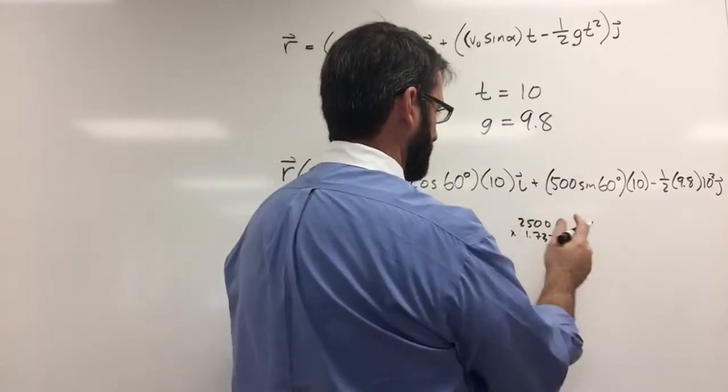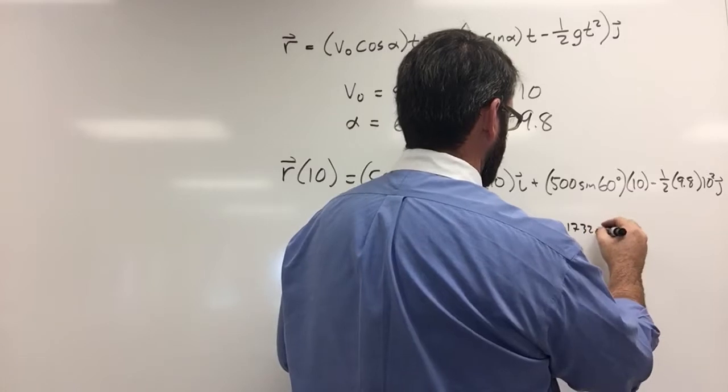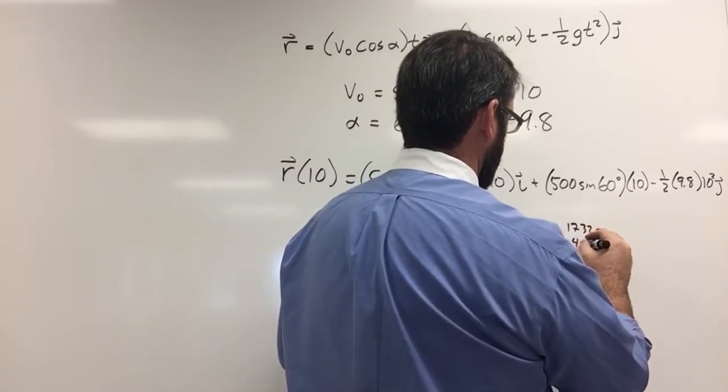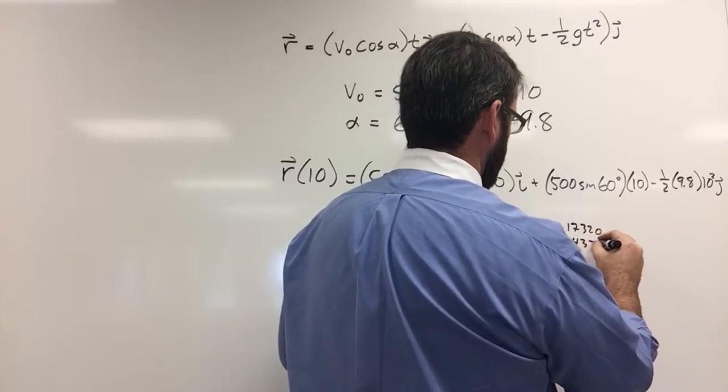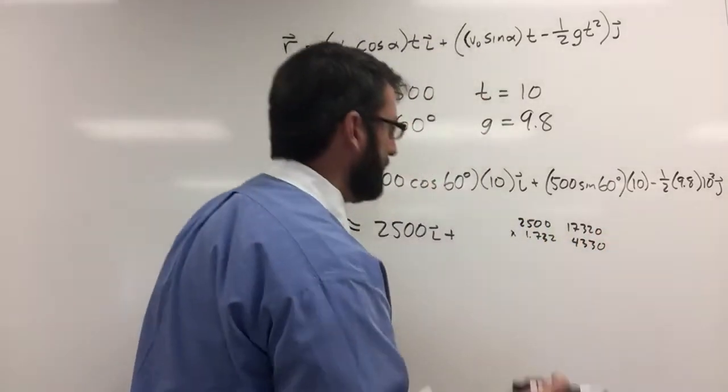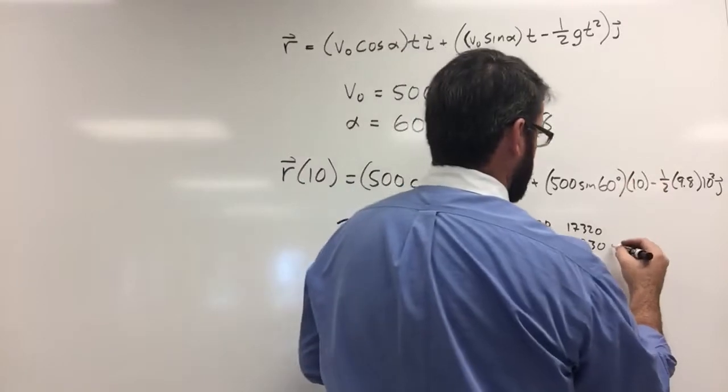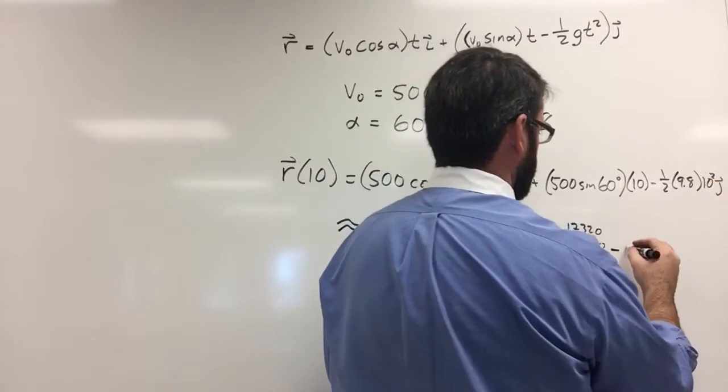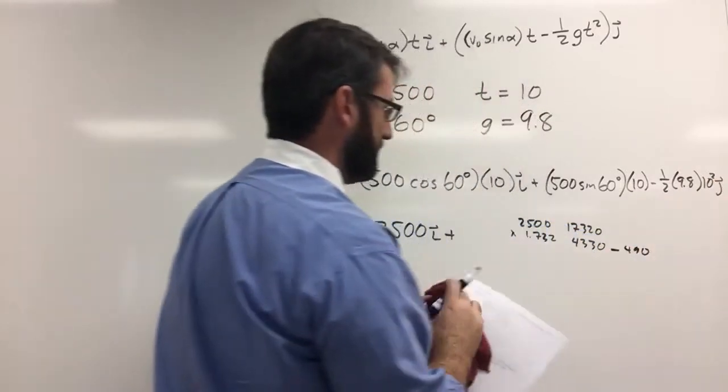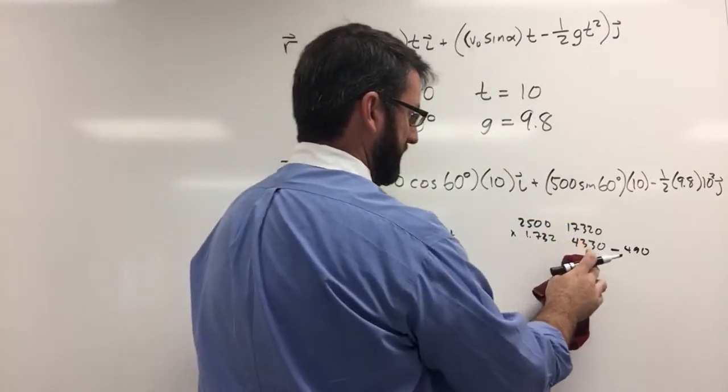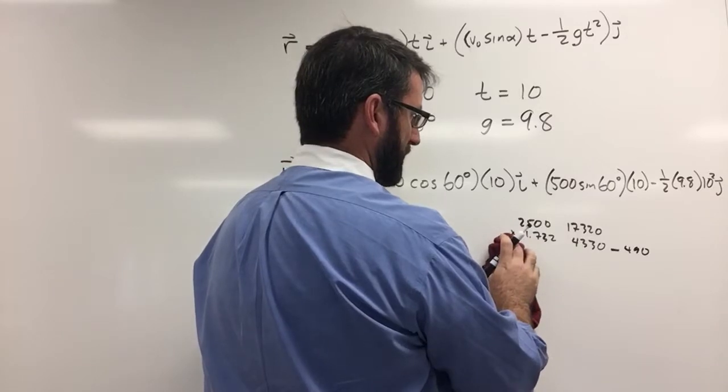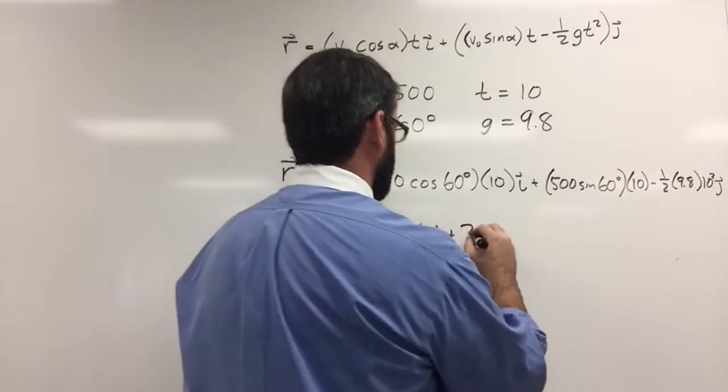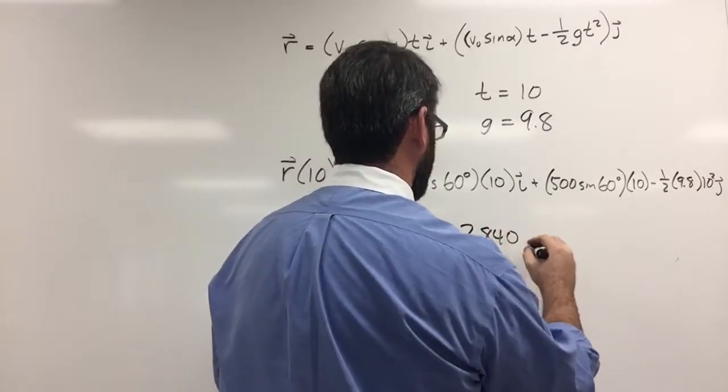Let's multiply by 10,000, that would be 17,320, and then divide it by 4. So that's going to be 4,330. So 4,330 minus 1 half times 9.8 is 4.9 times 100 is 490. So this is going to be 3,840. All right. So 3,840 j.